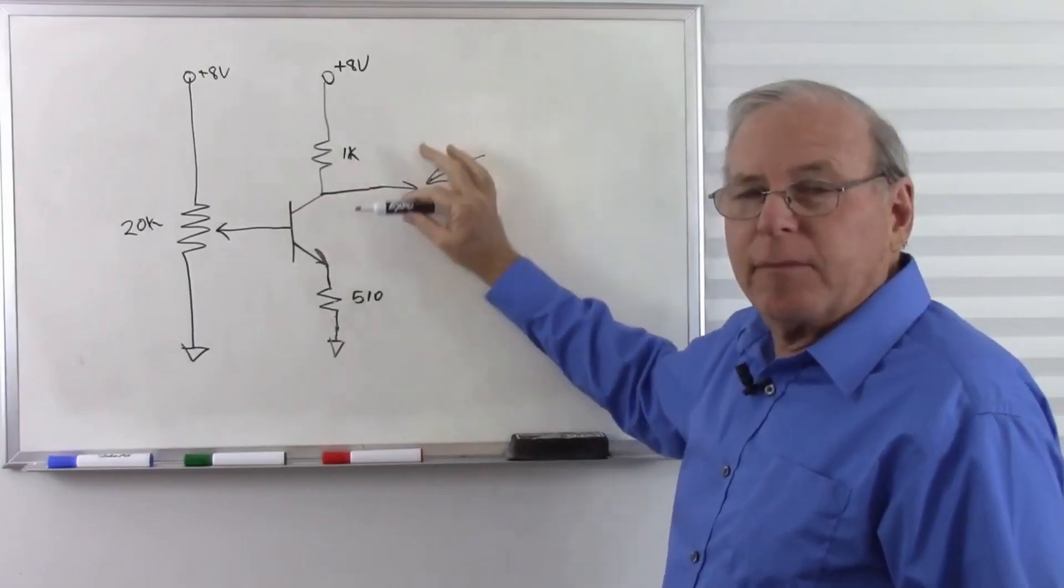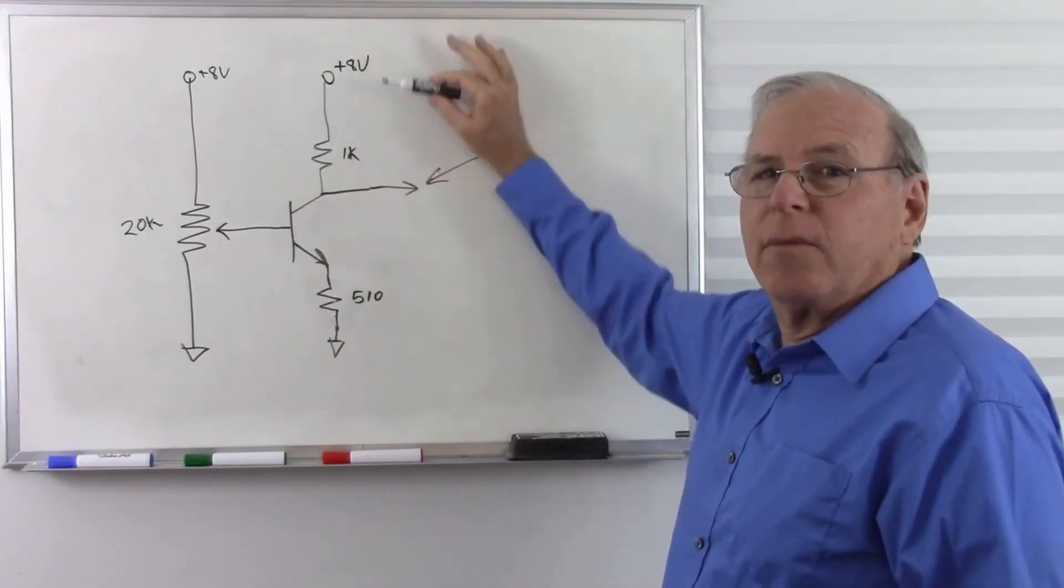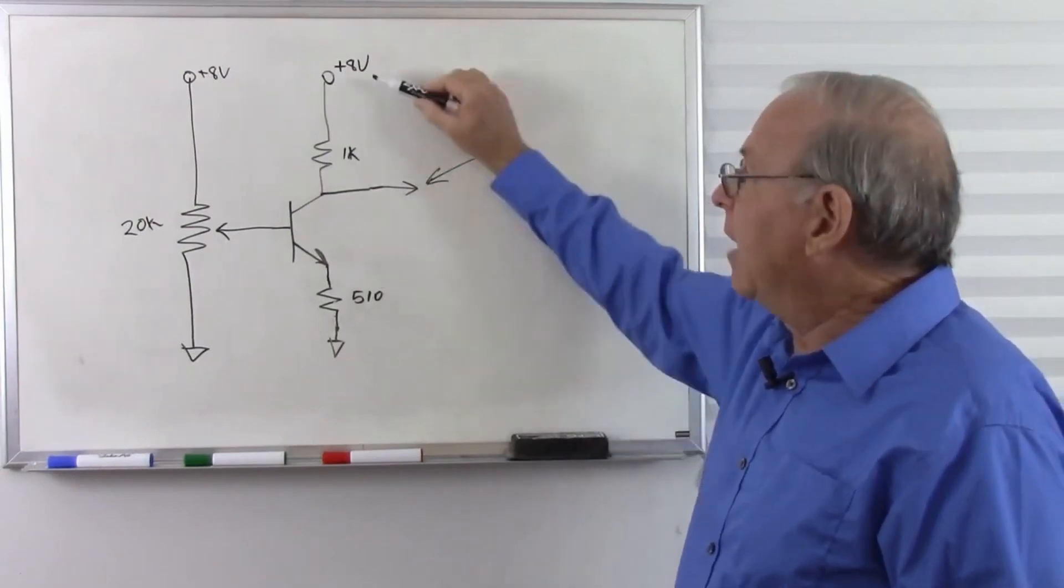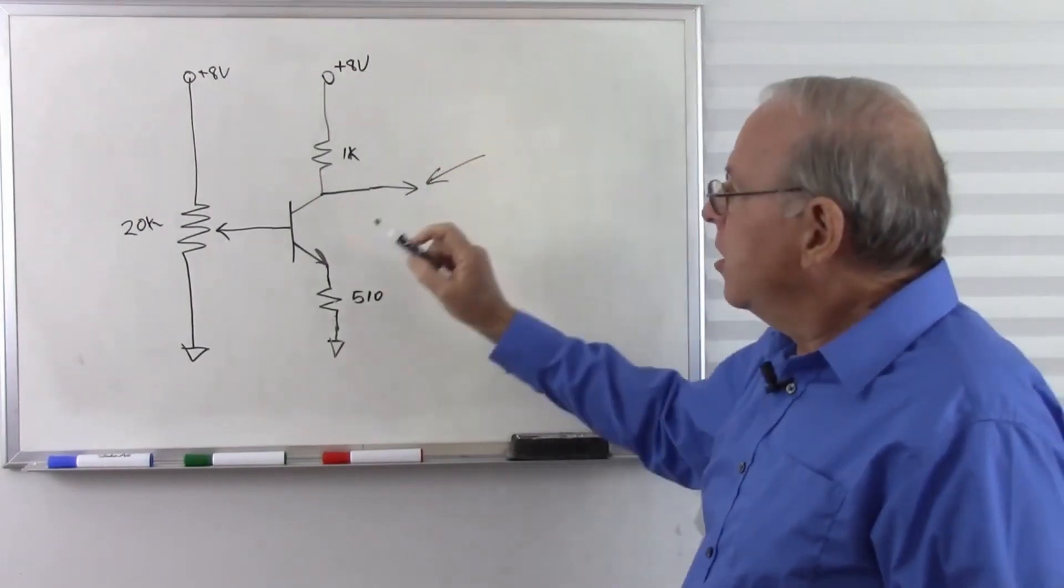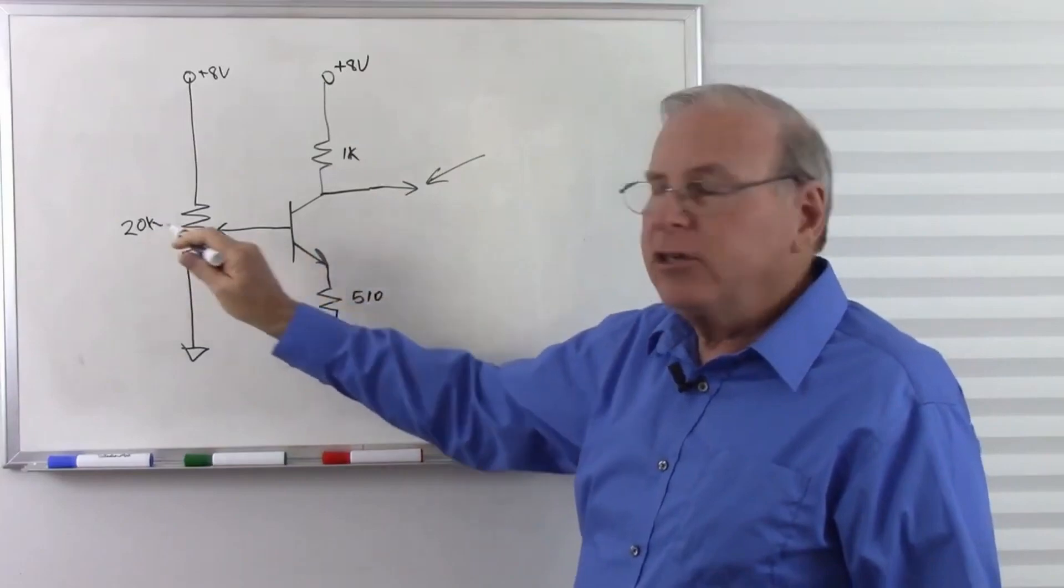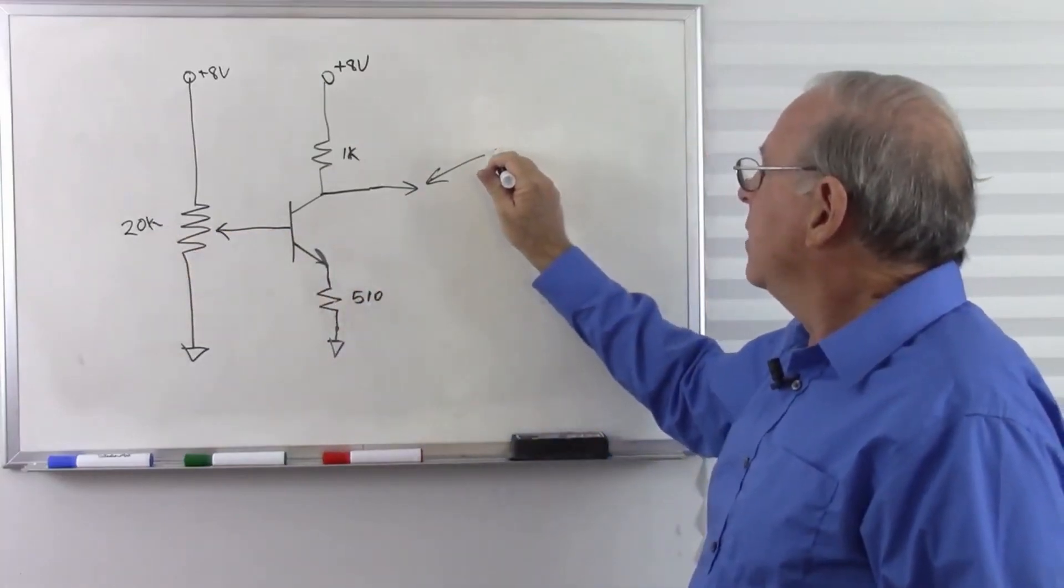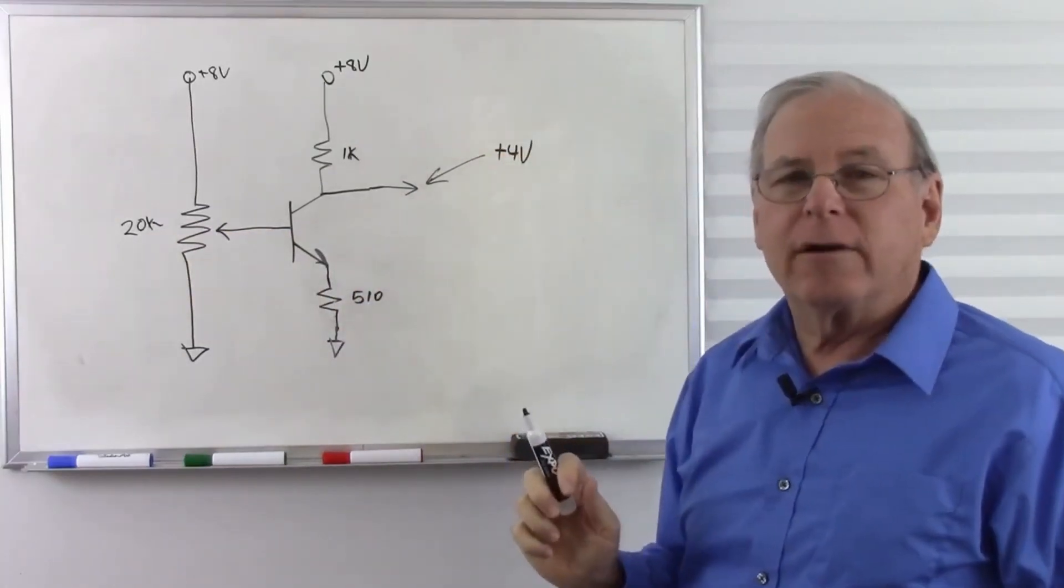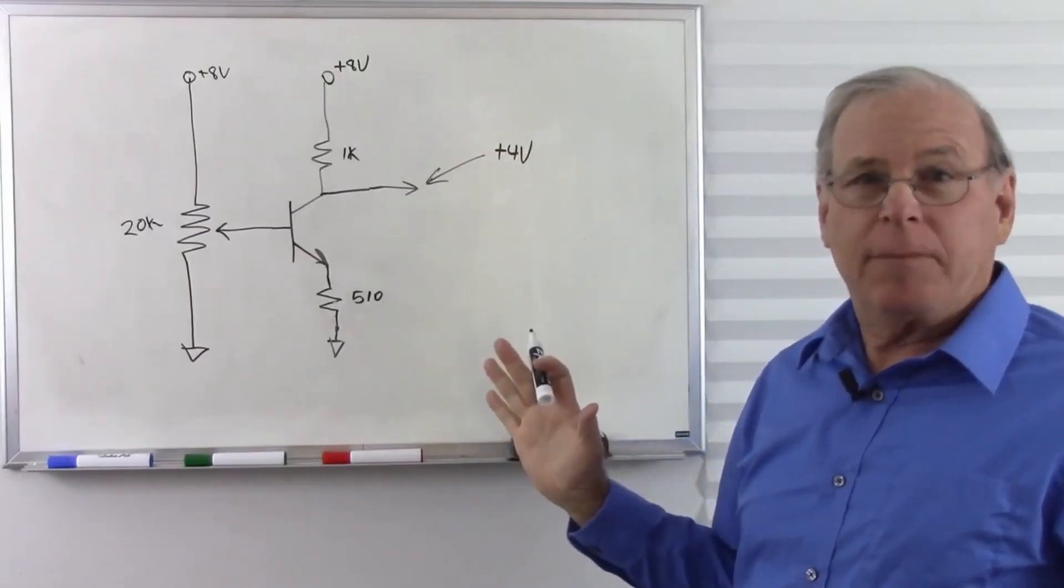So to make it symmetrical, to give us room to go either way as much as possible, we want to make this voltage half of our maximum voltage. So all we do is crank this potentiometer until we see 4 volts there. Easy peasy.